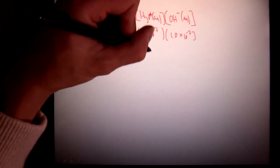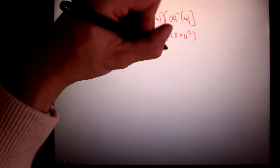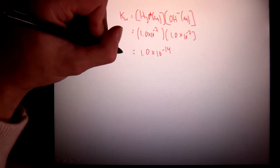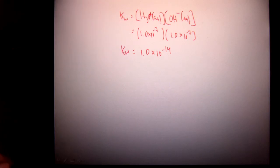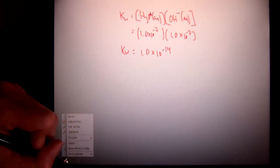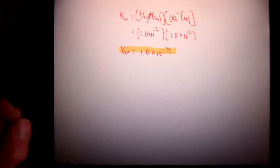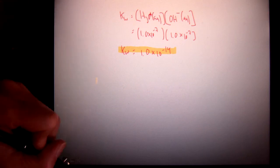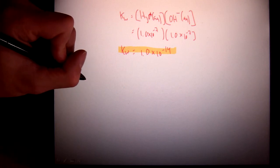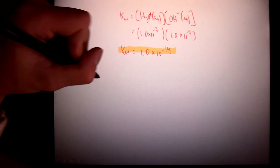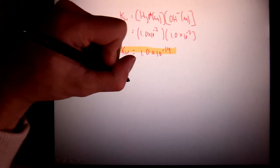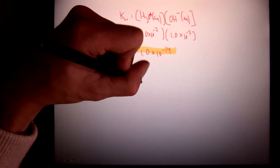Well, if I work that out, that equals 1.0 times 10 to the negative 14. What that means is that the product of hydronium and hydroxide will always come out to be 1 times 10 to the negative 14. So if I know one of them, let's say as an example, I knew that the hydroxide concentration of a basic solution was 1.0 times 10 to the negative 3 moles per liter.